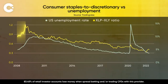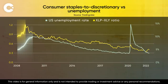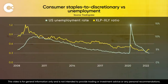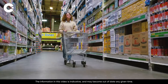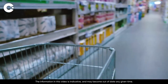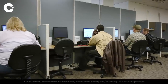Just as the consumer staples-to-discretionary sector ratio rose in 2008, US unemployment started climbing. But things were a little different during the Covid shock of 2020 — while unemployment soared, the consumer ratio didn't shoot up, because government stepped in with big stimulus packages, so there wasn't as big a hit on personal budgets. However, in 2022 the ratio has started to rise once again. When staples start outperforming the discretionary sector, it's a sign that consumer confidence could be about to fall, which could potentially lead to a recession.